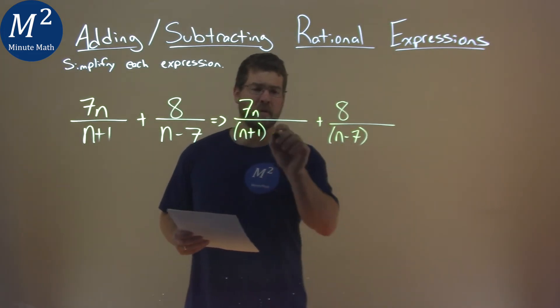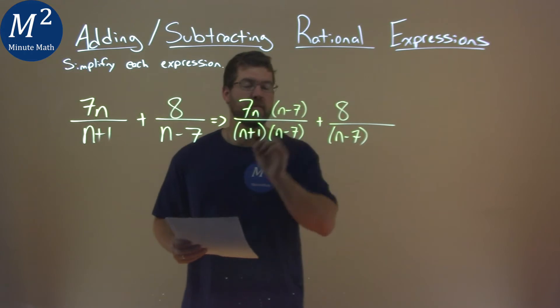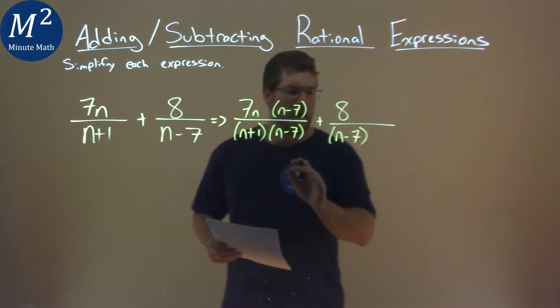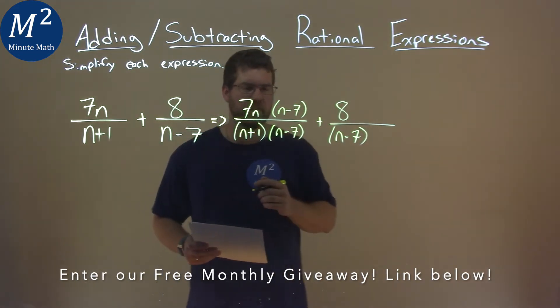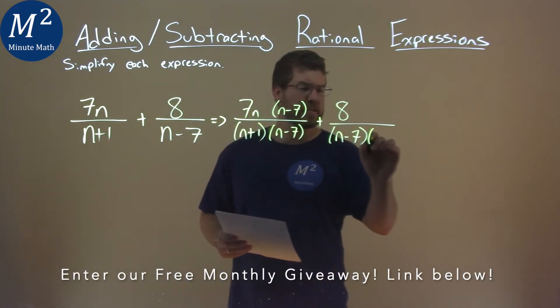So I'm going to take that denominator, the n minus 7 here, and we'll put it over itself. Well, why? n minus 7 over n minus 7 is equal to 1. They cancel each other out. It doesn't change anything.